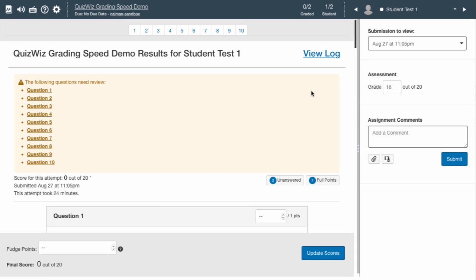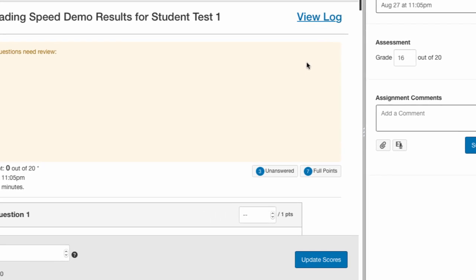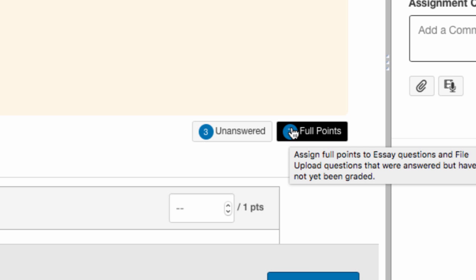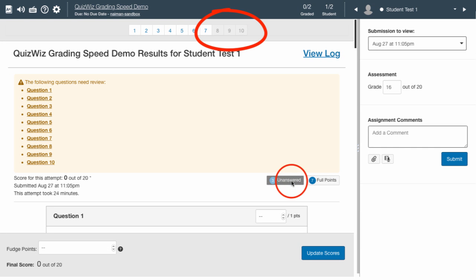Let's see how QuizWiz makes grading this quiz more efficient. Before you begin to grade a student's submission, QuizWiz indicates that there are three essay questions that have not been attempted, and seven that have been answered but require manual grading. Clicking the first button assigns zeros to the unanswered questions, while clicking the second button assigns full points to the answered questions. The buttons then become disabled to show that they have already been triggered.